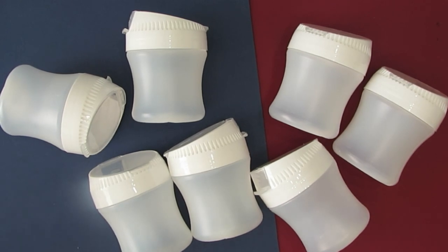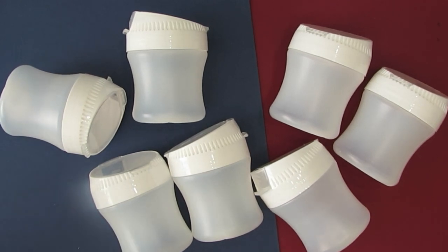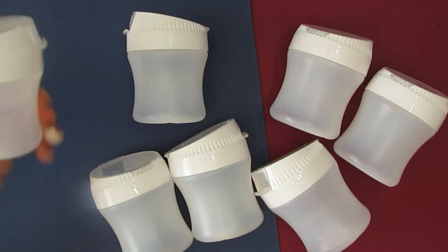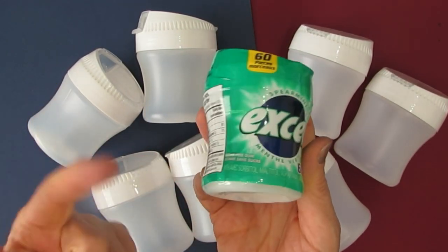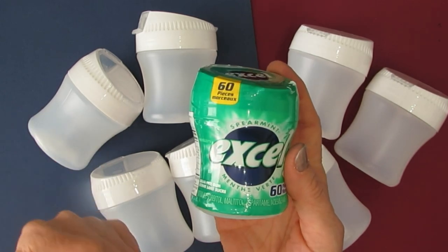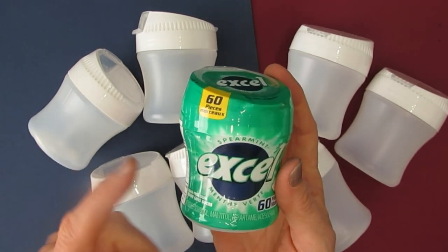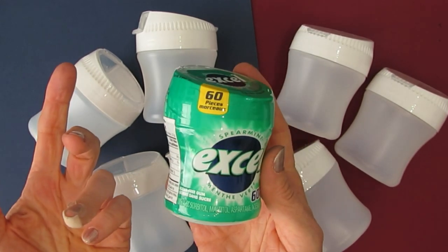What you're looking at here is an item I've saved from the recycle bin. These containers come like this. They're gum, there's candies in it. Could be this brand, could be other brands.